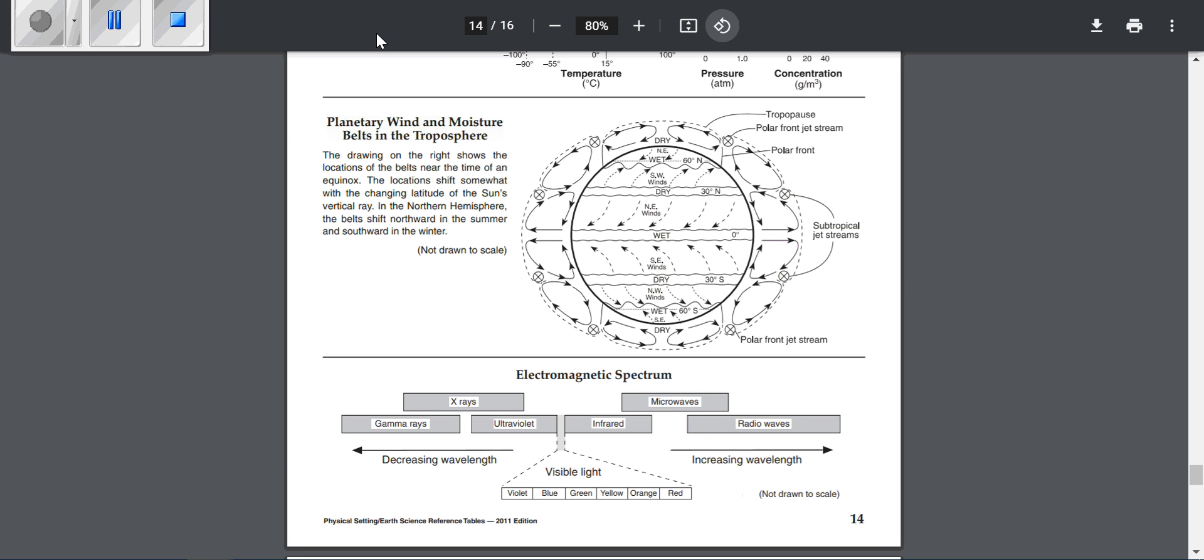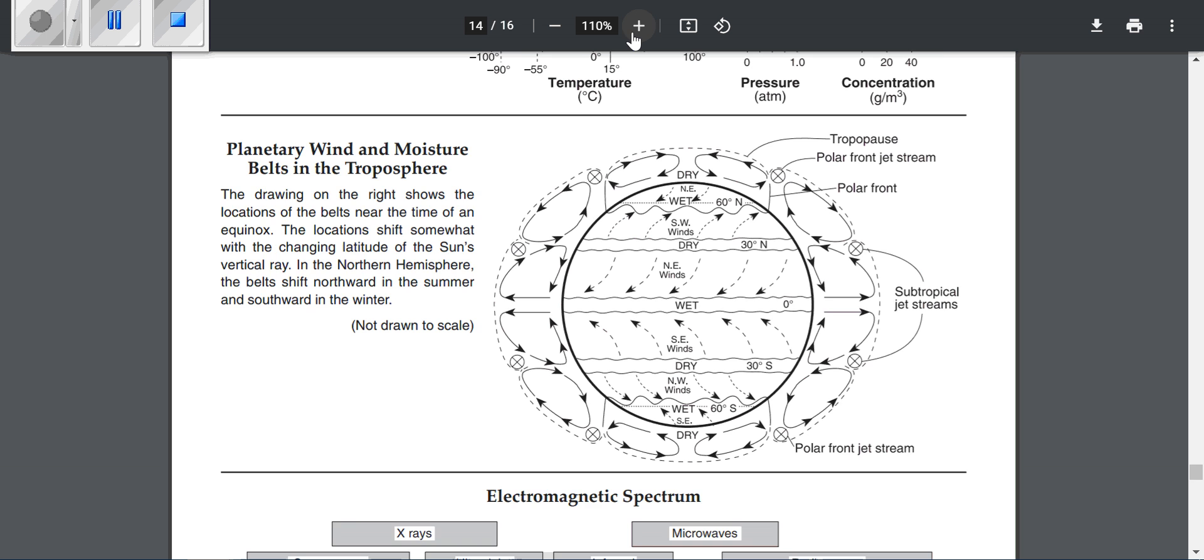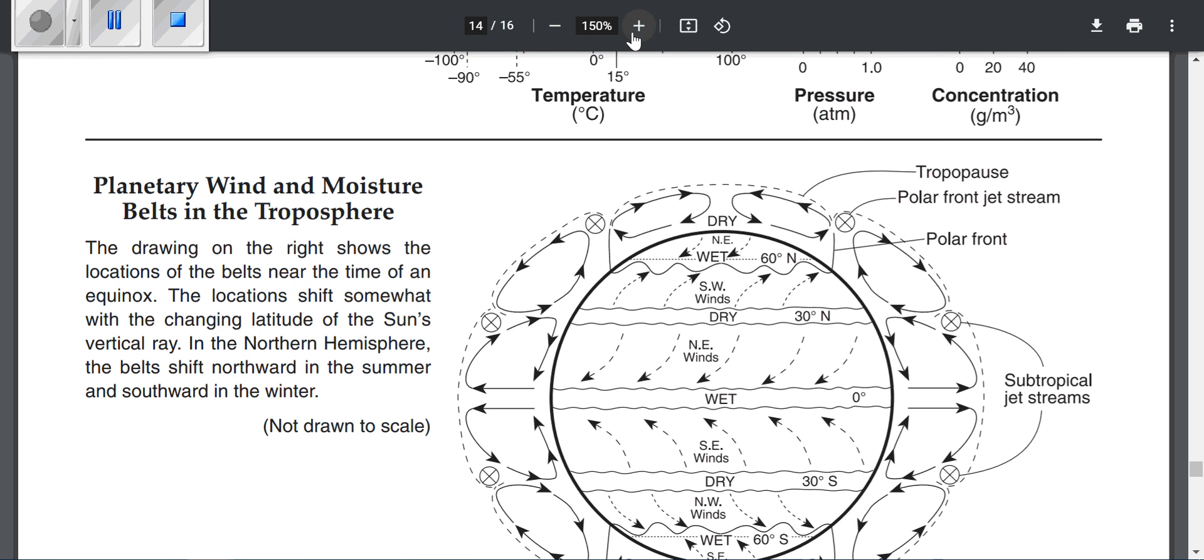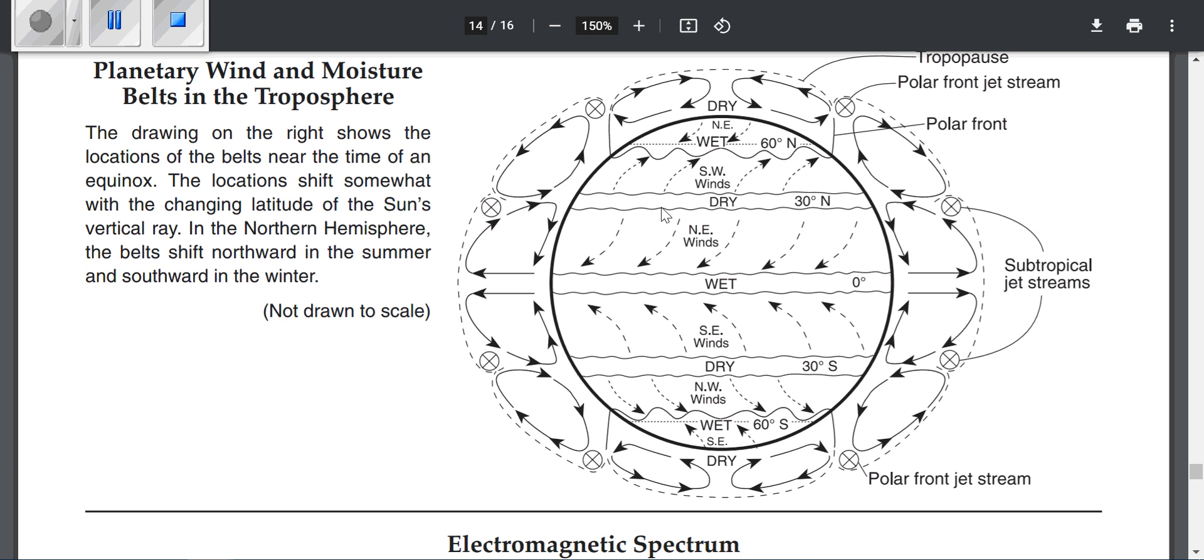This is always a confusing diagram from our reference table, page 14: Planetary wind and moisture belts. The question I probably get asked the most is, what am I looking at?